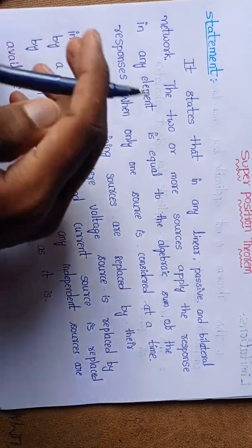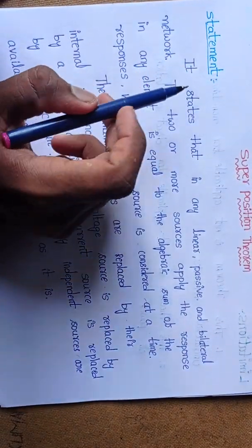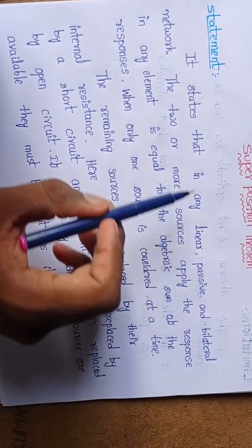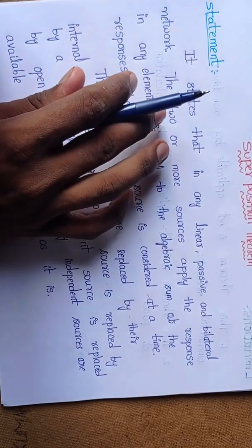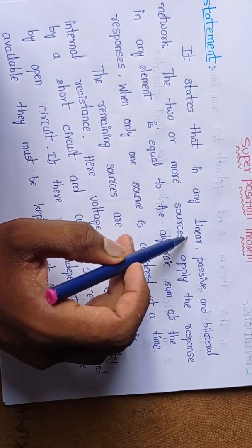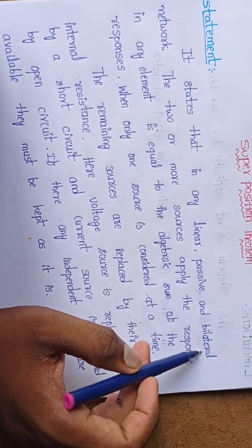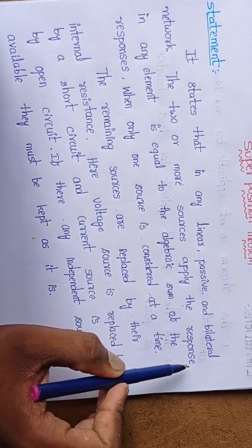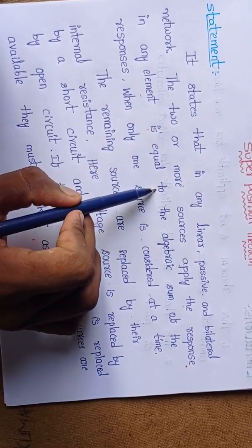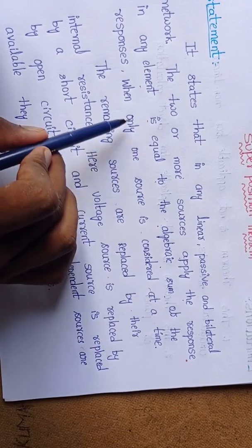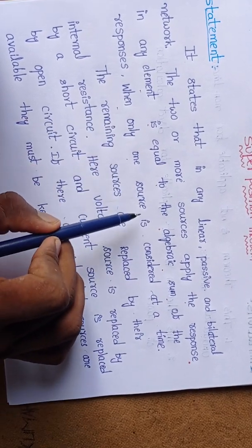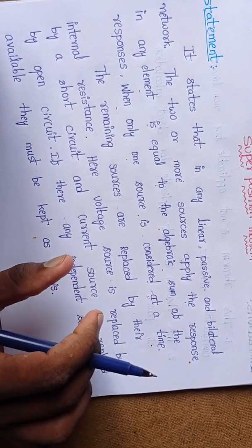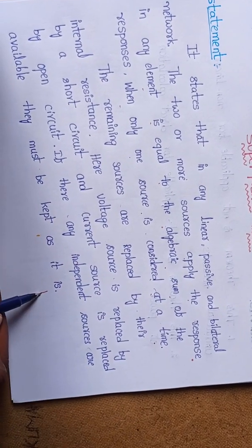First let's see the statement of superposition theorem. It states that in any linear, passive, and bilateral network — meaning it is only applicable to linear, passive, and bilateral networks — when two or more sources are applied, the response in any element is equal to the algebraic sum of the responses when only one source is considered at a time.